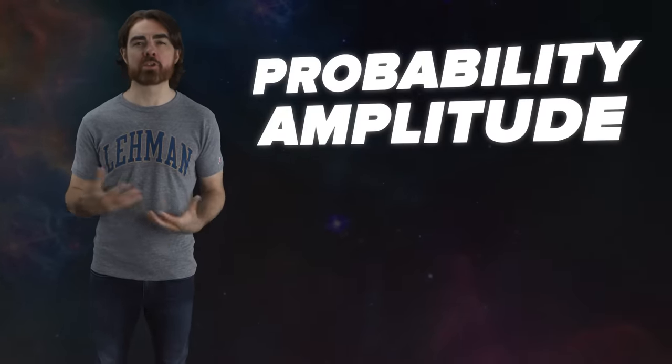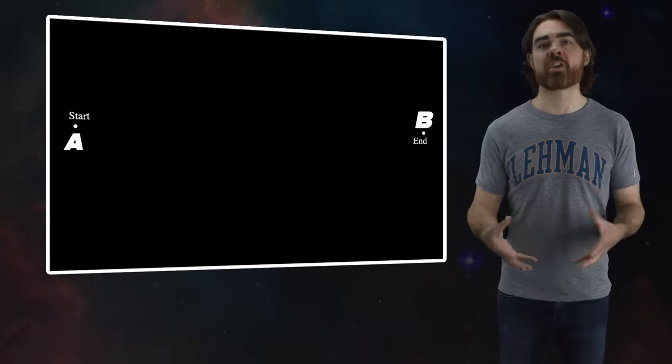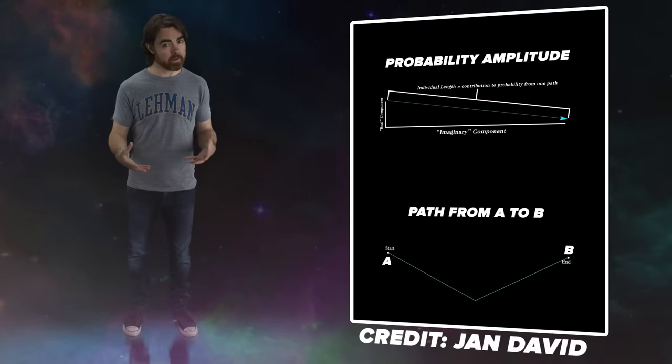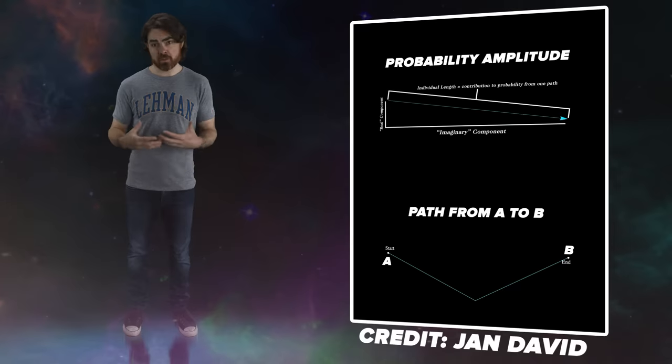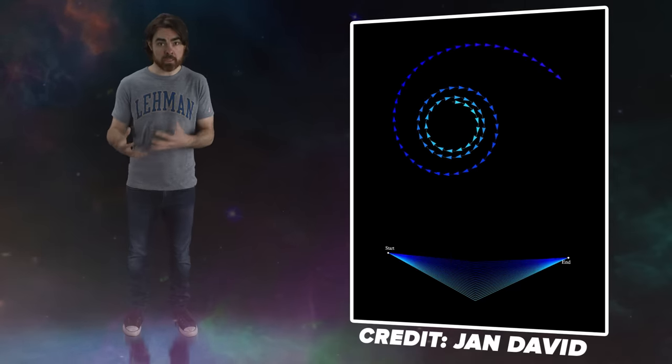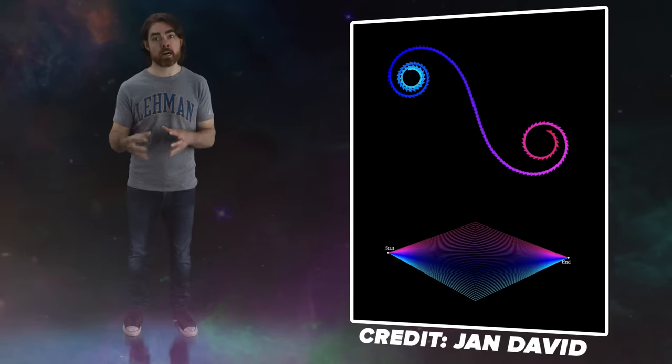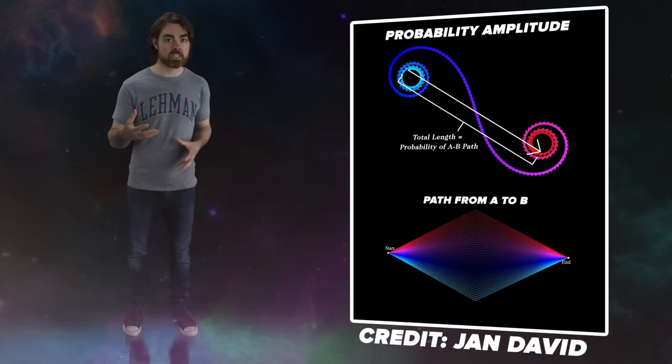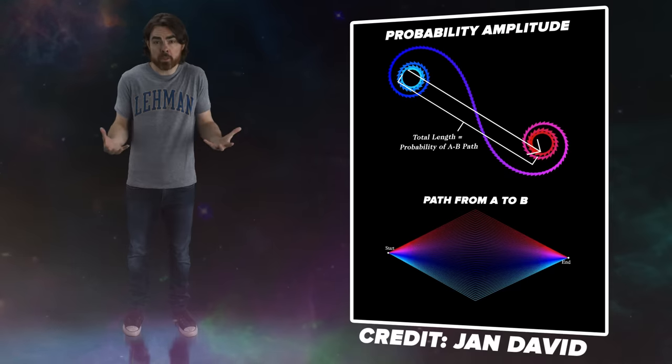Feynman's paths don't each have some separate probability of occurring. Instead, each path contributes what we call a probability amplitude to the entire A-to-B journey. Schrödinger's wave function and Feynman's path integral both describe this probability amplitude. Regular probabilities are normal positive numbers between 0 and 1, but probability amplitudes are complex numbers. We can think of each path's probability amplitude as a vector — an arrow of a certain length and direction in an imaginary 2D space. The total length of each arrow gives the probability of that path. To get the total probability that a particle travels from A to B, you connect all the probability amplitude arrows end to end, and the length of the final arrow represents the total probability from all paths.